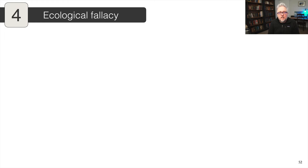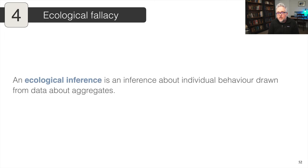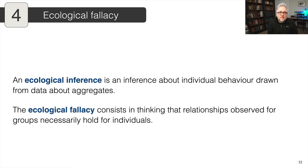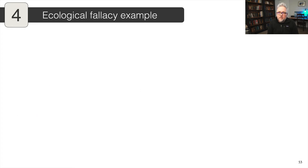The next thing is the ecological fallacy, which is a challenge when using aggregate-level data. An ecological inference is an inference about individual behavior drawn from data about aggregates. This is something Gary King at Harvard wrote an entire book about how to do. However, it's often easy to fall victim to the ecological fallacy instead of actually conducting the analysis in a way that connects group-level data to individual behavior. More likely, people end up thinking that relationships observed for groups necessarily work for individuals.